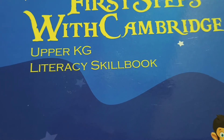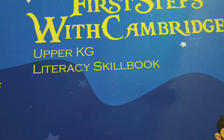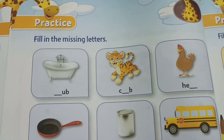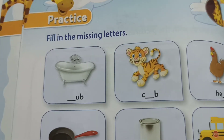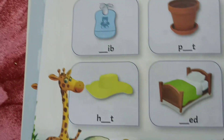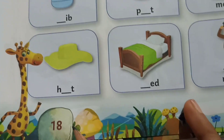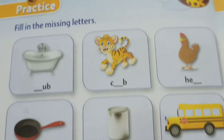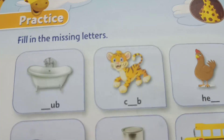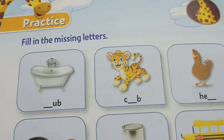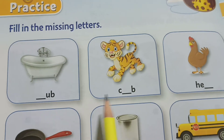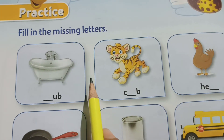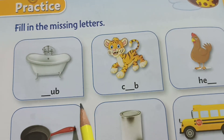Welcome to the Literacy Skill Book. Fill in the missing letters. Page number 18. Children, there are pictures here given. You need to see the pictures and fill in the missing letters.